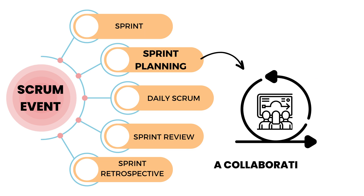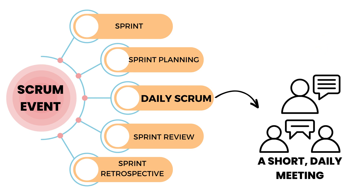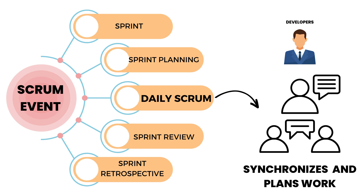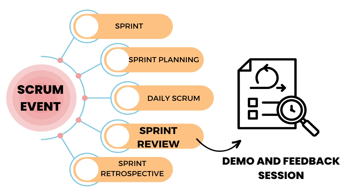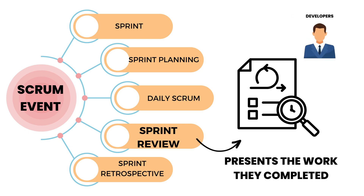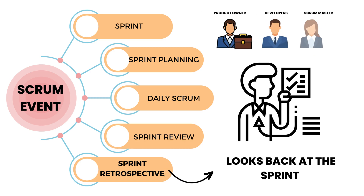Sprint planning is a collaborative event where the development team and product owner work together to determine what work will be completed in the sprint. The daily Scrum is a short daily meeting where the development team synchronizes their work and plans for the next 24 hours. The sprint review is a demo and feedback session with stakeholders where the development team presents the work they completed during the sprint. The sprint retrospective is a reflective meeting where the team looks back at the sprint and identifies ways to improve.